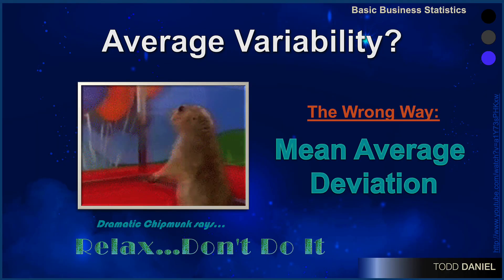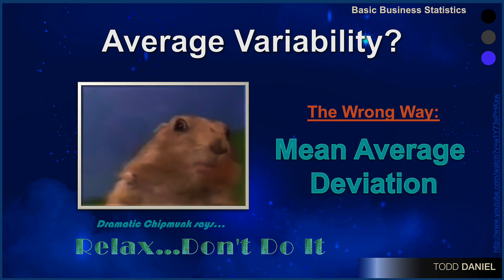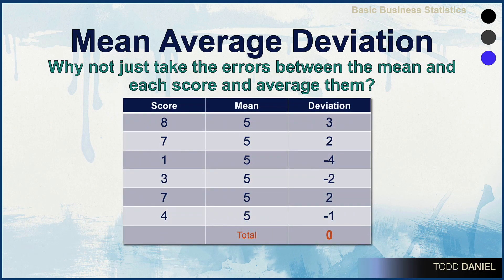That makes sense, but the mean average deviation is the wrong way to calculate variability, and let me show you why. In this table, we have placed the scores — the number of dog toys owned by each dog — in the first column. We've calculated the mean and put that in the second column to make it easier to do the math. We're going to subtract the mean from each raw score to get a deviation score: 8 minus 5 is 3, 7 minus 5 is 2, 1 minus 5 is negative 4. We could complete the table in this same way. To calculate the average deviation, we would add up the deviation scores and divide by the total number of scores.